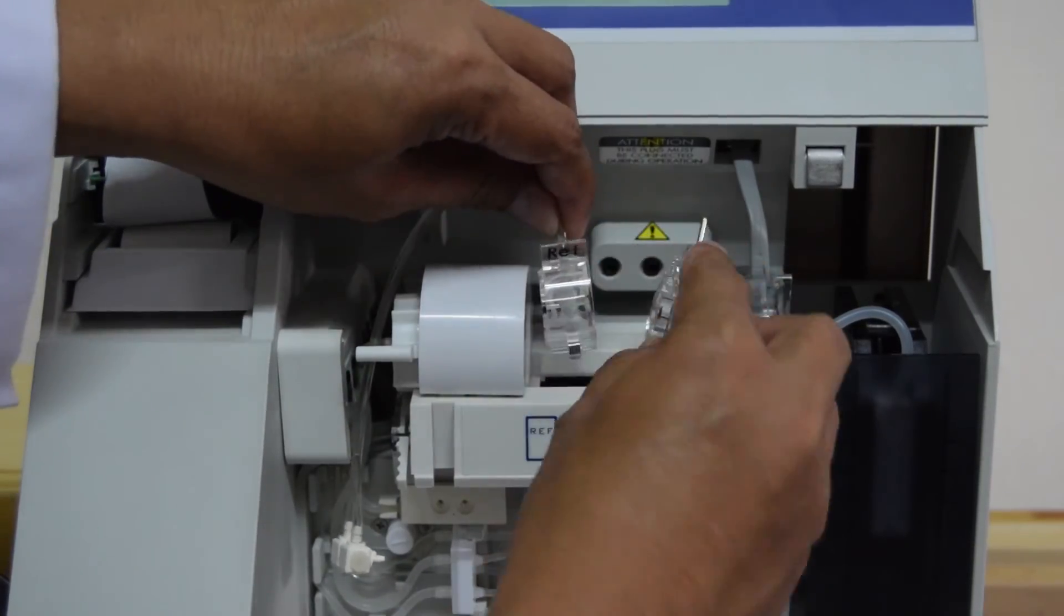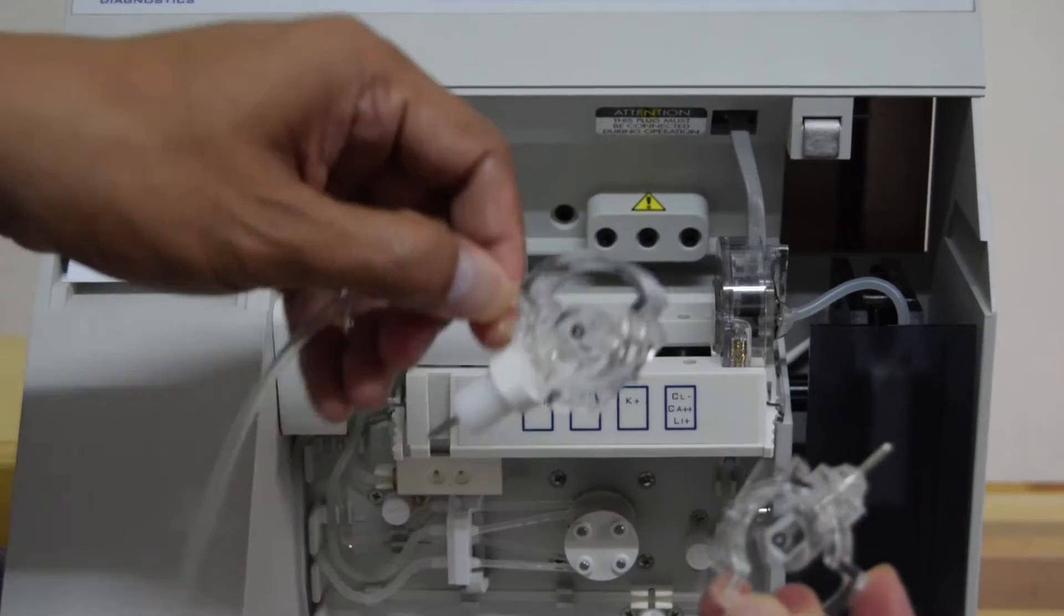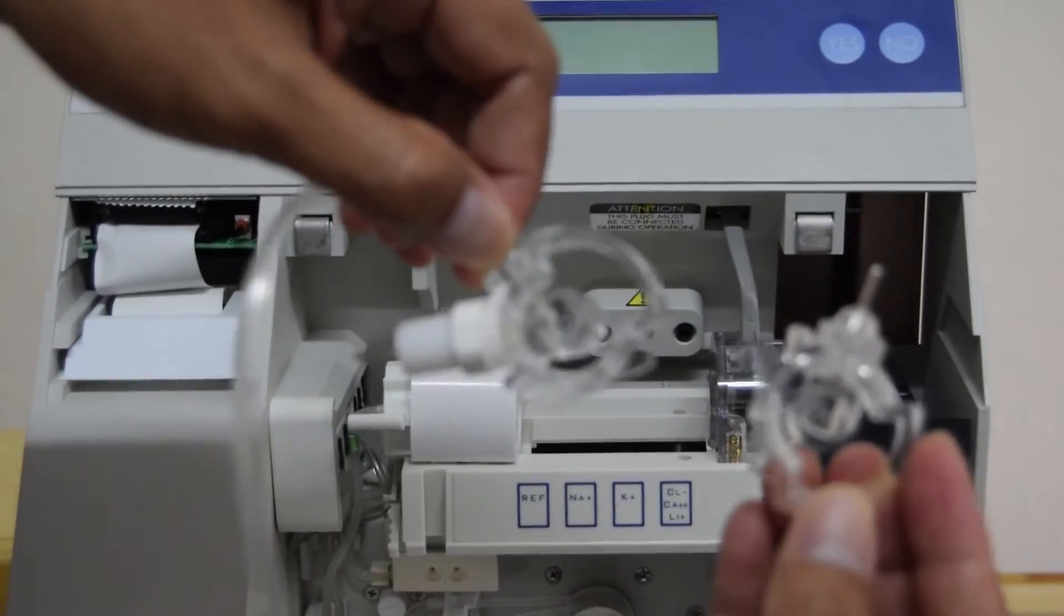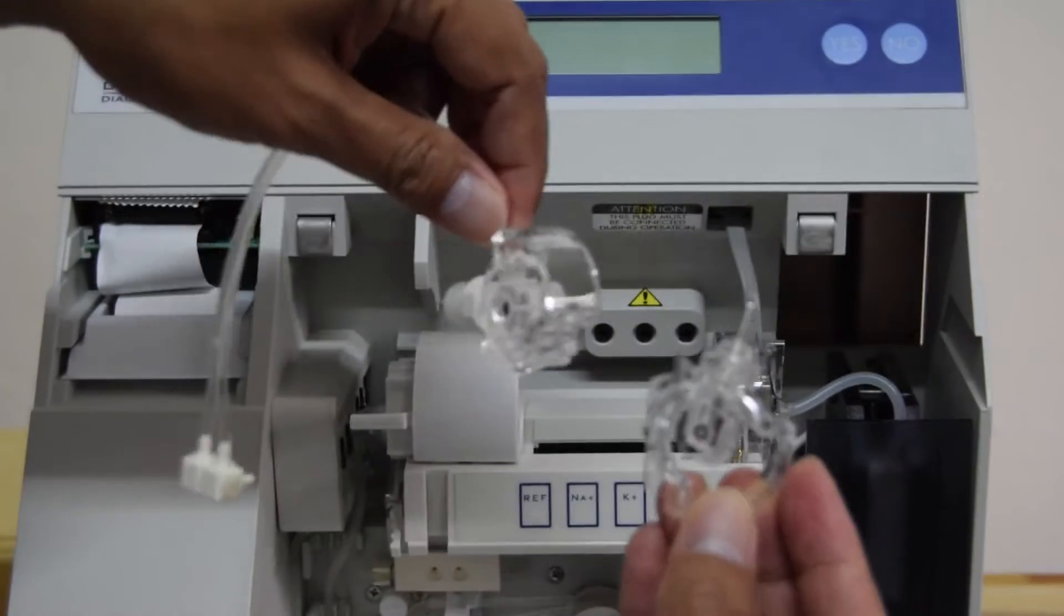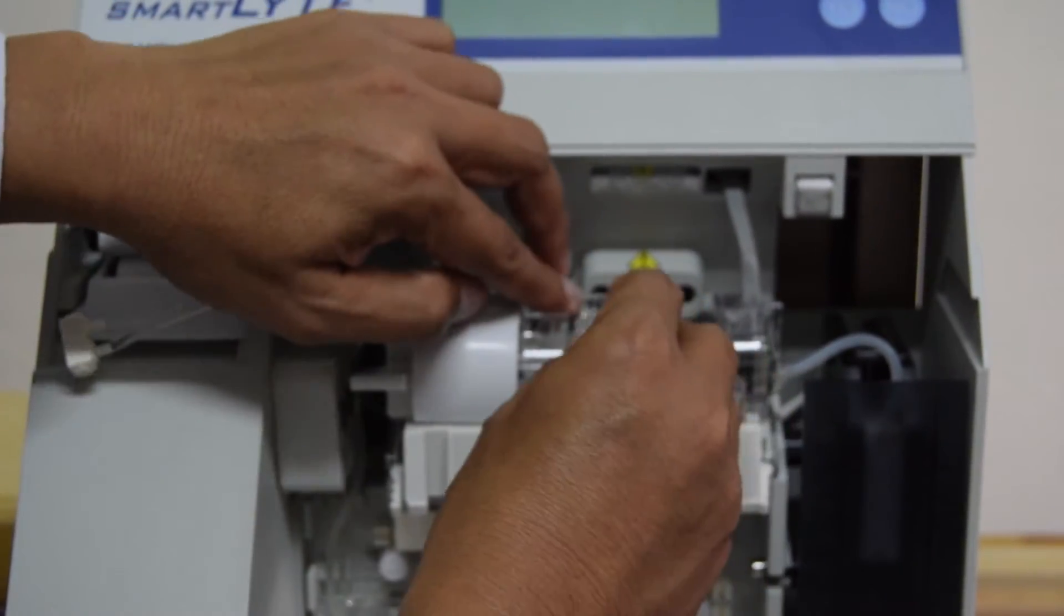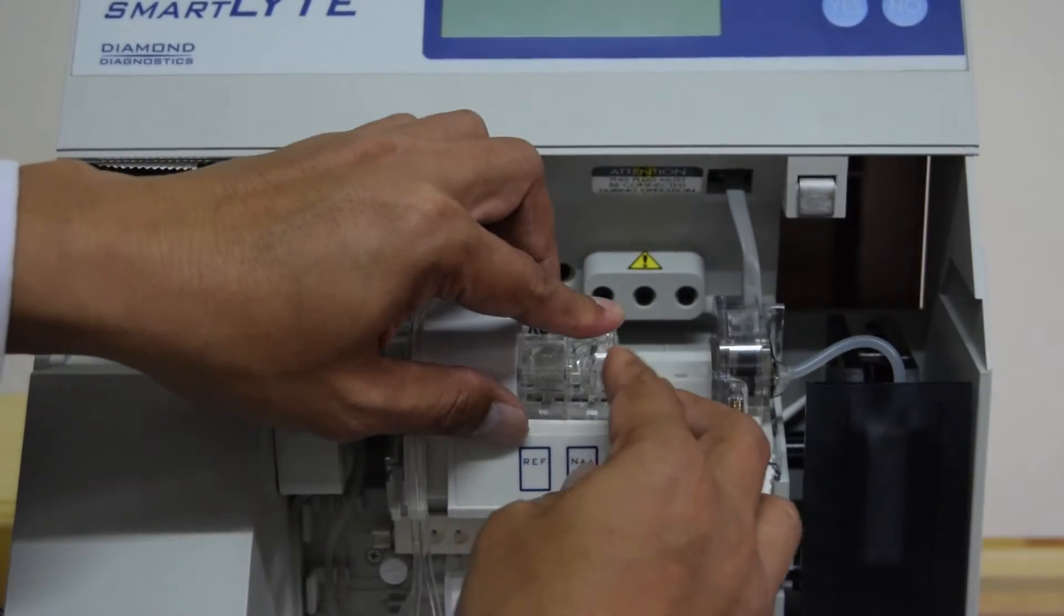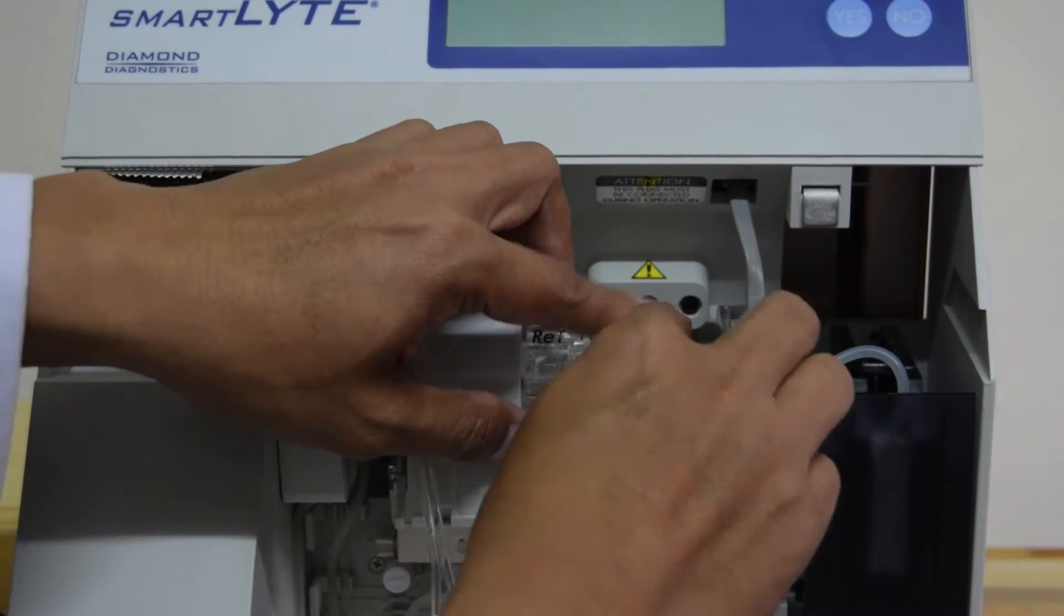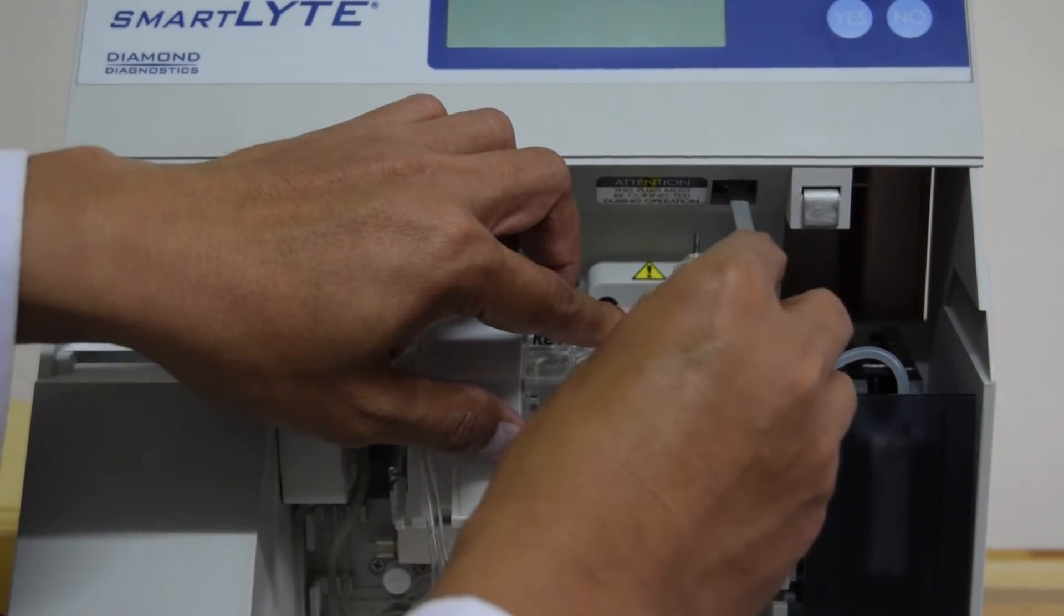Bisa dipasang sekaligus. Atau dipasang terpisah. Kalau dipasang terpisah, dimulai dari ref. Dari yang paling kiri. Sebelum dipasang, dipastikan dulu. Dipastikan bahwa O-ring pada bagian kiri dari elektroda ini semua ada dan terpasang. Seperti ini. Terus kalium. Dan kloride.